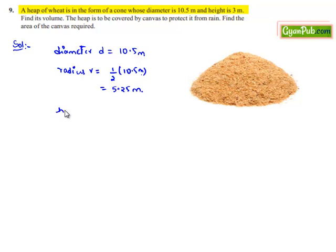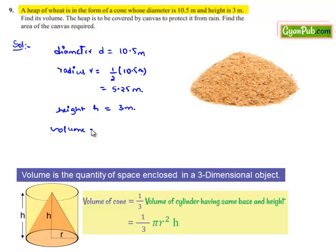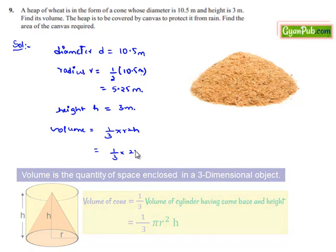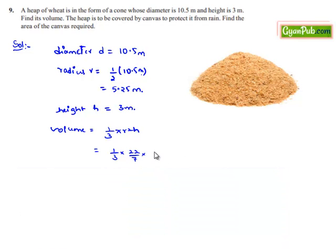Similarly, the height of the heap is also given which is 3 meters. He asks us to find the volume as the heap is in the form of cone. The volume of heap will be equal to volume of cone, that is 1/3 πr²h, which is equal to 1/3 of π value is 22/7 and r² is 10.5 × 10.5 / 4 × h is 3 meters.